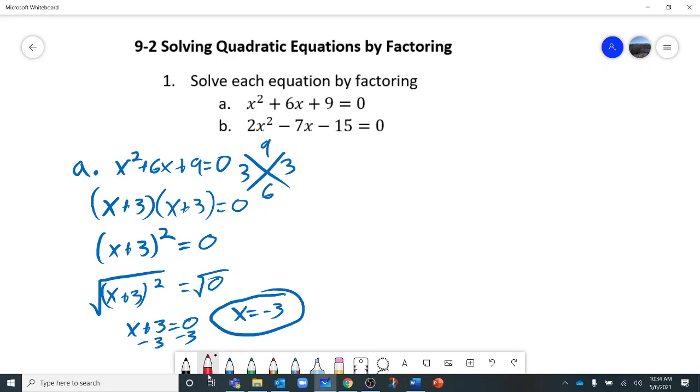So b, not so perfect looking. Okay, 2 times negative 15 is negative 30 and negative 7. So what times what equals negative 30? And if I add it, equals negative 7. Let's see, we've got 15 and 2. That won't work.